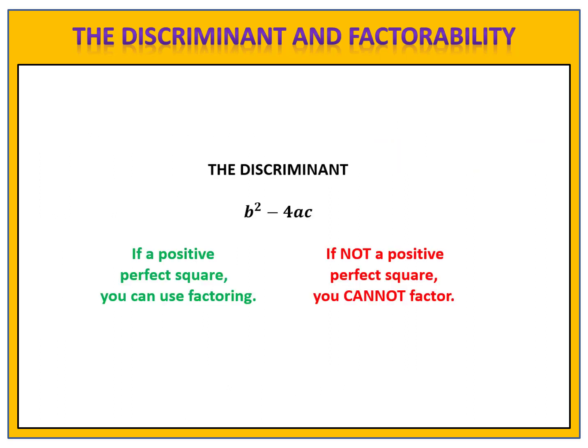When it comes down to solving an equation, it all comes down to the discriminant. We have many options to choose from when solving quadratic equations: factoring, completing the square, and the quadratic formula. The discriminant is a quick and easy test that we can use in order to determine whether or not factoring is one of the tools that we can use.